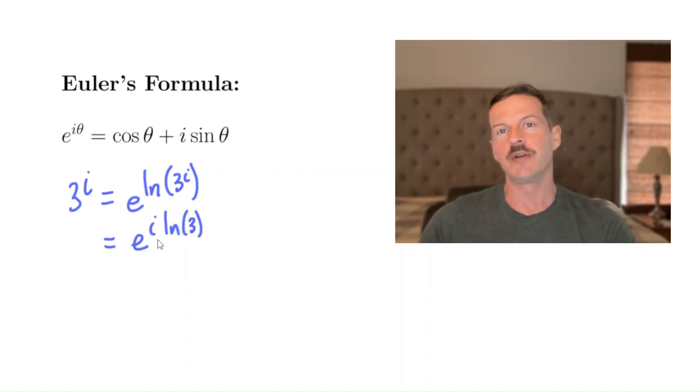And now is when we use Euler's formula. In fact, notice this is of the form e to the i theta, where theta is natural log of three. So using that identity here, the Euler's formula, we can write this as cosine of ln of three plus i sine of natural log of three.